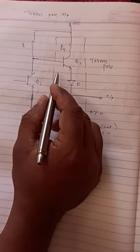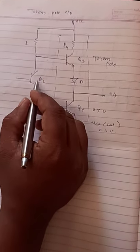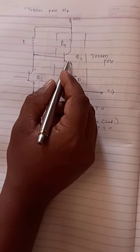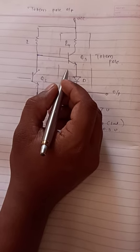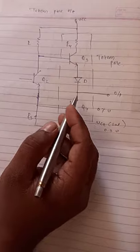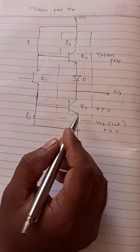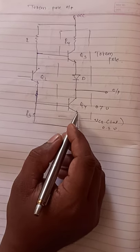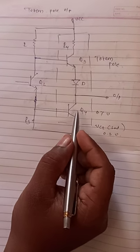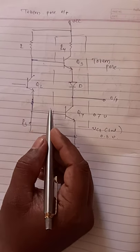We directly get from Q2, from the collector to the base drive of Q3, and it will work. They will not conduct simultaneously at a time, Q3 and Q4. It will either work for Q3 or either work for Q4. Q3 and Q4 totally depend on the Q2 transistor.